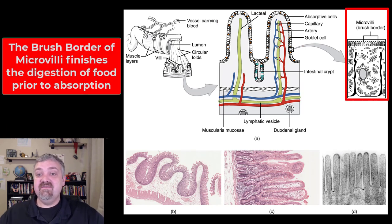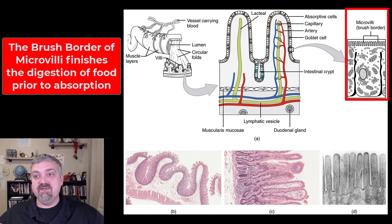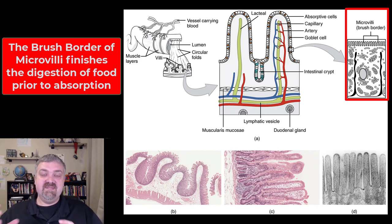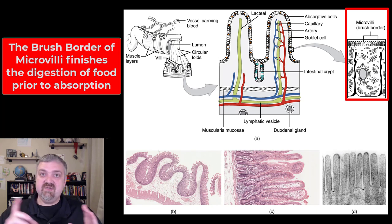Each of these villi is covered with microvilli, as you see here on the right side. These are about a micrometer wide, so they're very, very small. There are about 200 million of these microvilli per square millimeter — they're everywhere, and they look like bristles, which is why they're called the brush border. The lining of your small intestine is covered with these microvilli in what's called the brush border, and they're important for digestion because the brush border contains enzymes that finish off digestion — like maltase, which takes maltose and splits it in two, or sucrase.